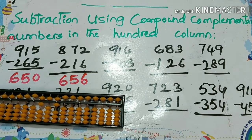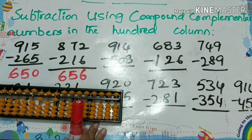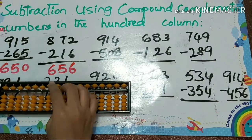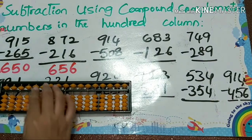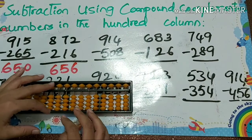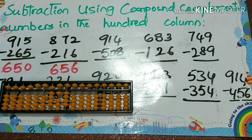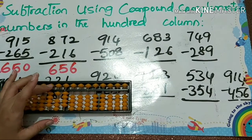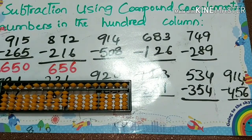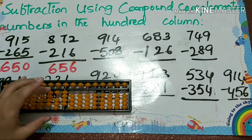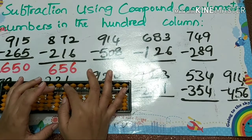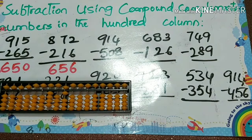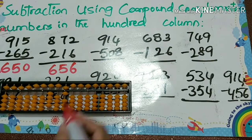Next one: 914 minus 508. Minus 5 we can do directly, and 0 — no need to change anything. Minus 8: that is minus 10 plus 2 — papa down, mama down, baby's down. Answer: 406.